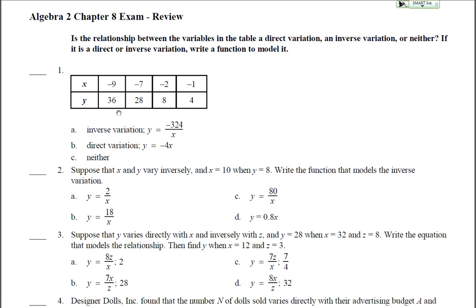First, let's try multiplying. 36 times negative 9 is obviously not going to be the same as 4 times negative 1, so we know it's not inverse variation — with inverse variation, you multiply x times y, and if it gives the same value, it's inverse. For direct variation, we divide y by x: 36 divided by negative 9 is negative 4, 28 divided by negative 7 is negative 4, 8 divided by negative 2 is negative 4, and 4 divided by negative 1 is negative 4. So it is direct variation, k equals negative 4, and our equation is y equals negative 4x.